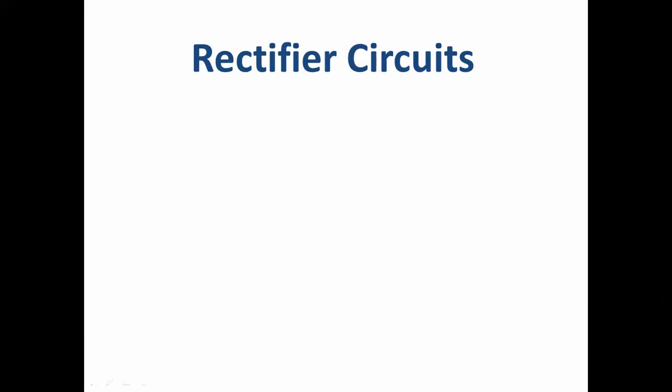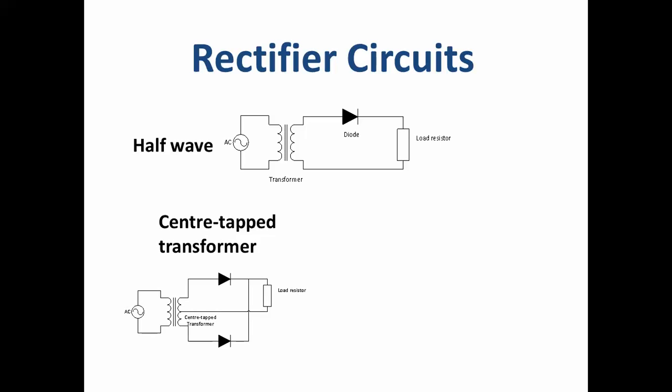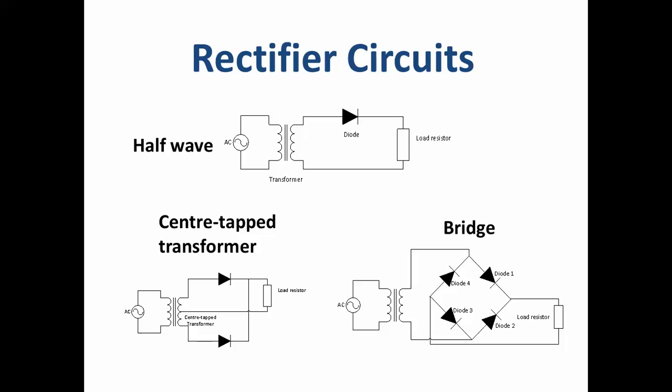The main job of a diode is to turn AC current into DC current. We've got three main rectifiers: half-wave, a centre-tapped transformer, and a bridge rectifier. All of these circuits will take an AC waveform such as this where the current is going backwards and forwards and will turn it into a DC waveform where the current is only flowing in one direction.